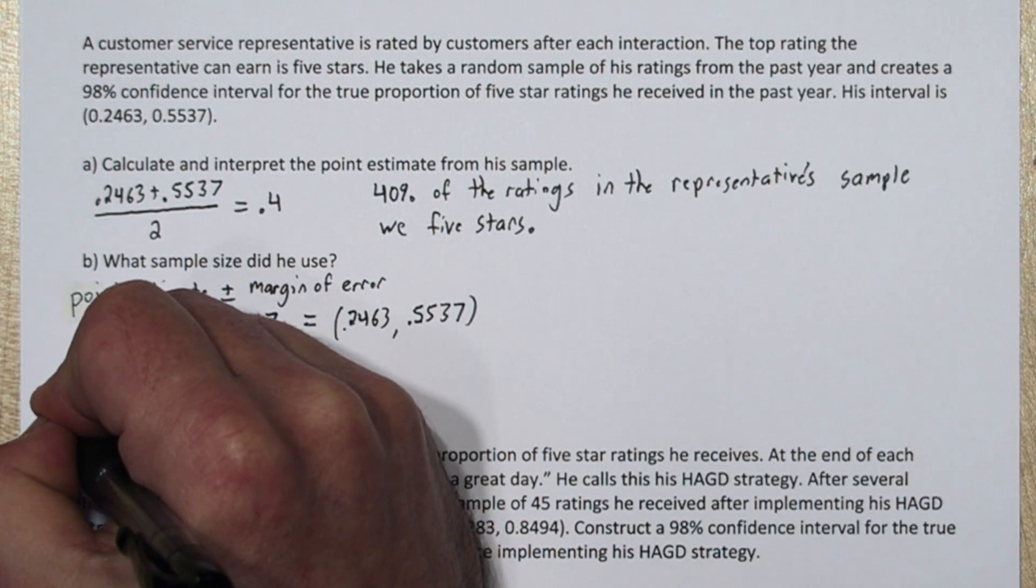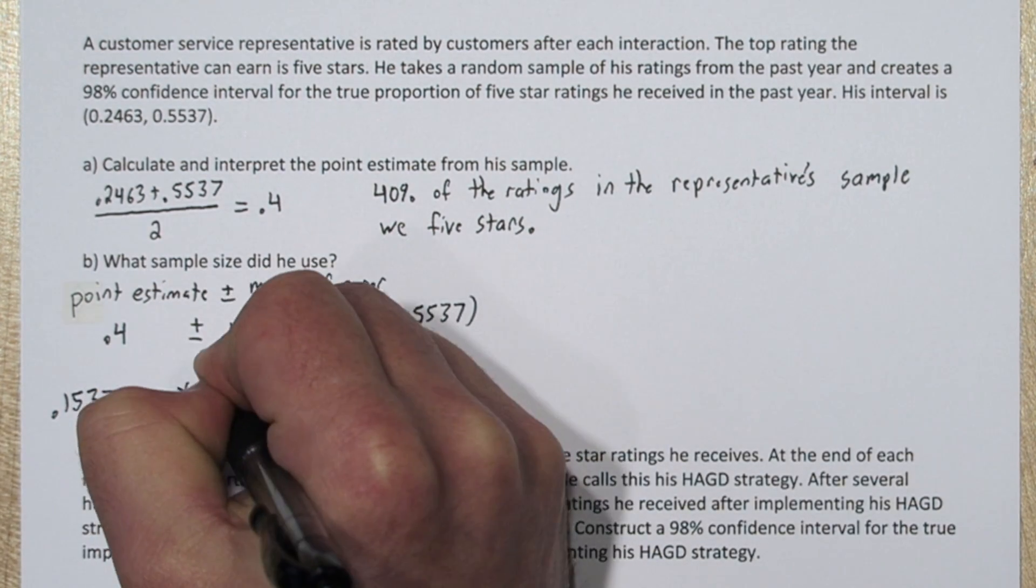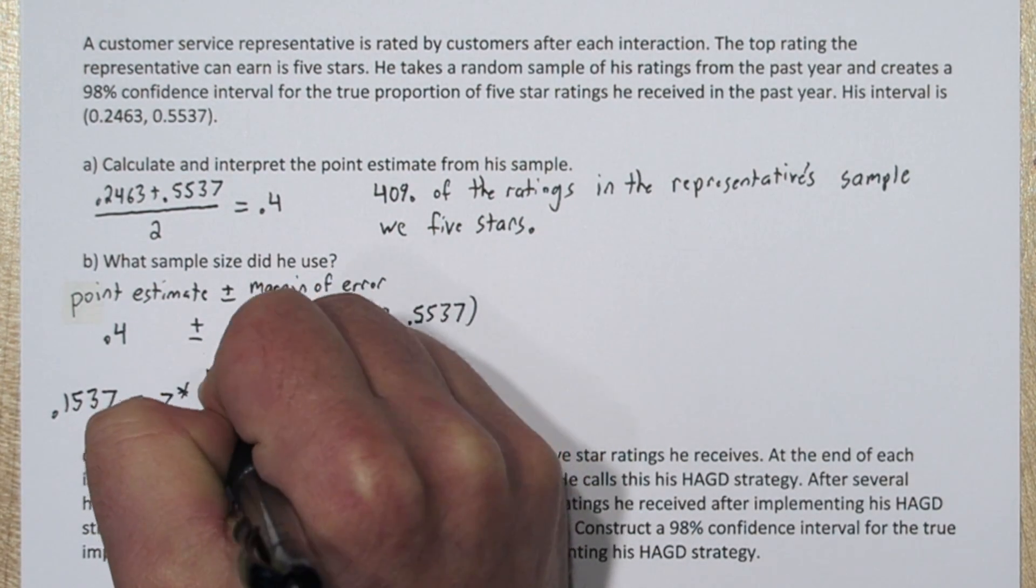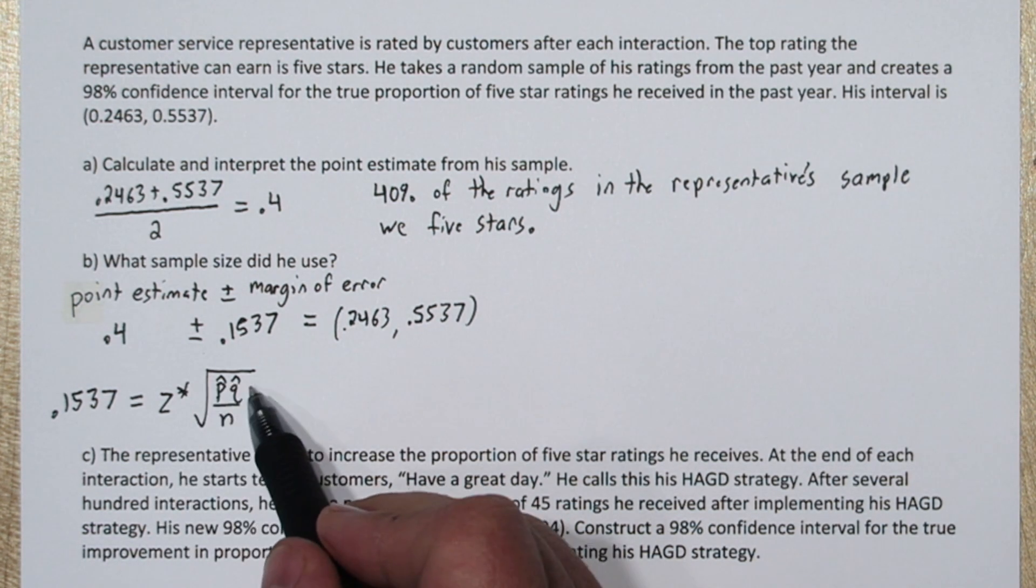Now for this type of confidence interval, margin of error equals z star, our critical value, times the square root of p hat q hat over n. Now p hat's just our point estimate, 0.4, and q hat is its complement, 1 minus 0.4, so it's 0.6. So we know what these two values are.